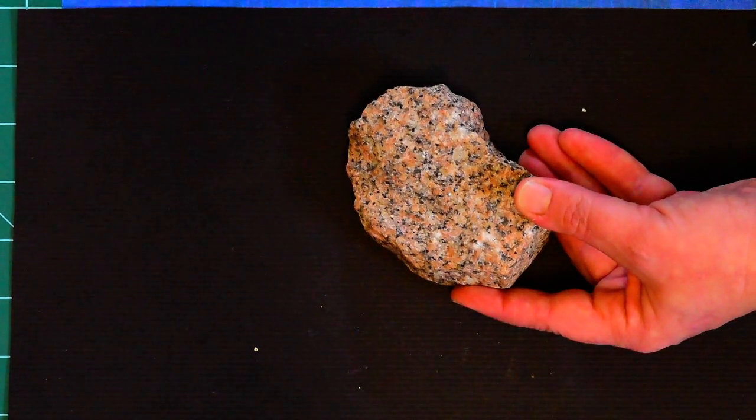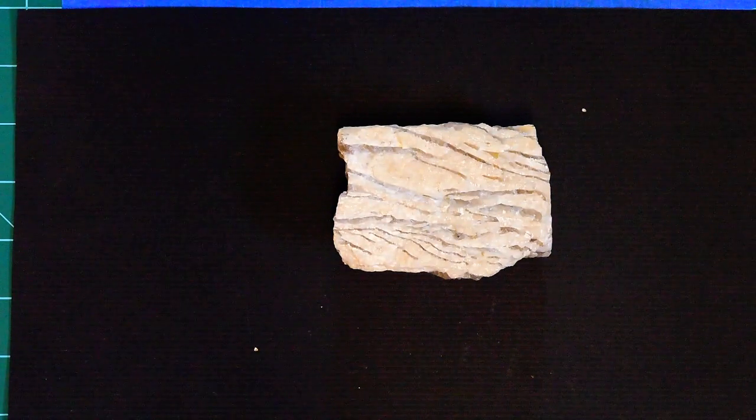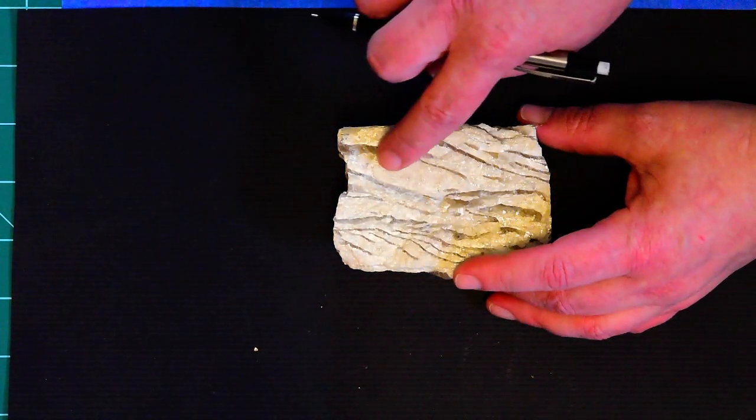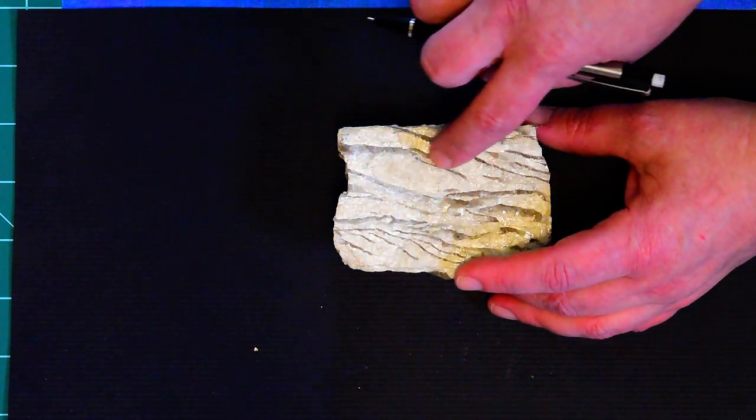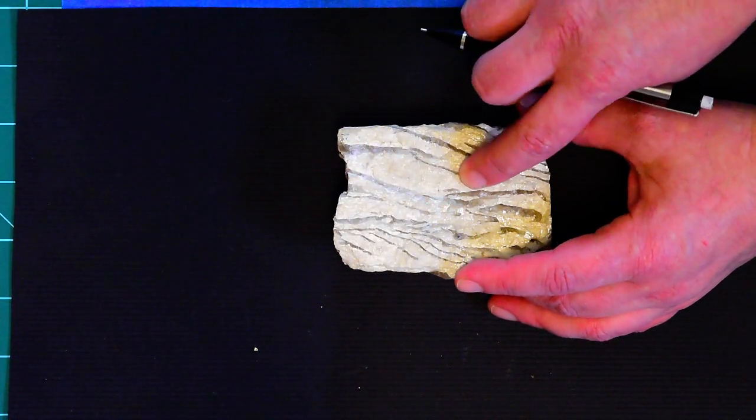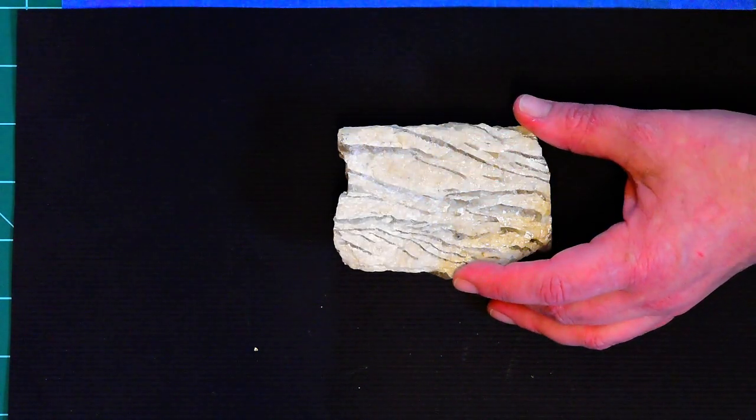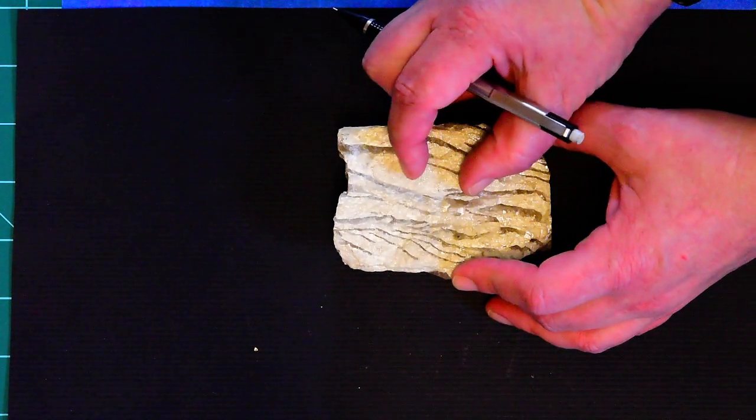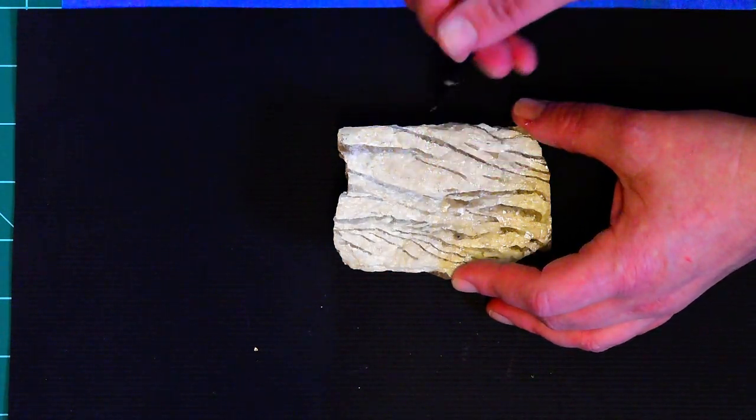This would be a pegmatitic texture. Notice the size of some of these feldspar crystals in there. To be considered a pegmatite, at least the crystals need to be a centimeter, and here we have lots that are even bigger than that.